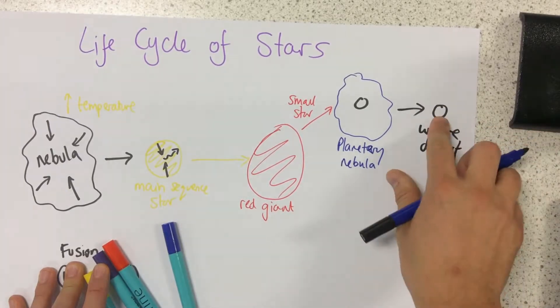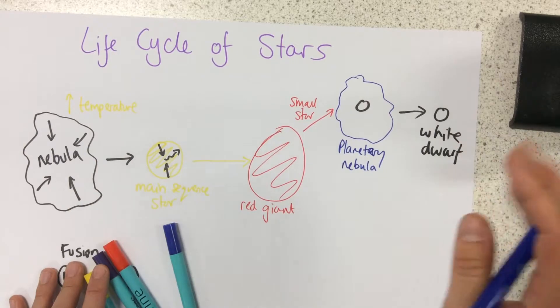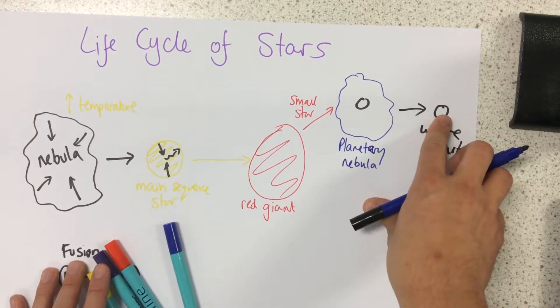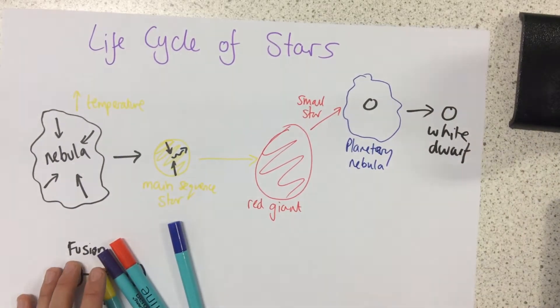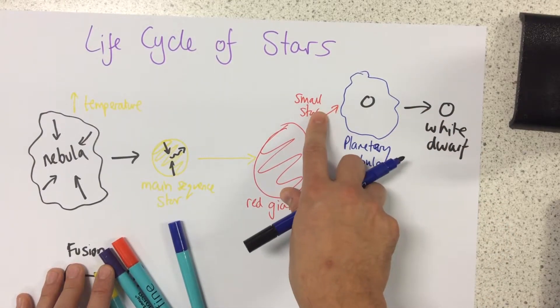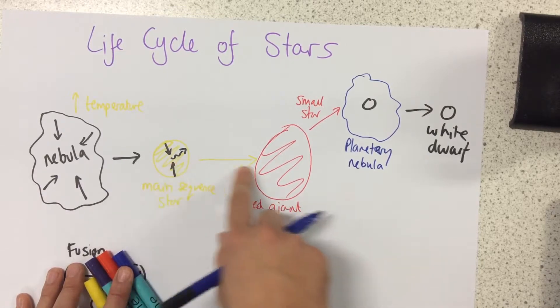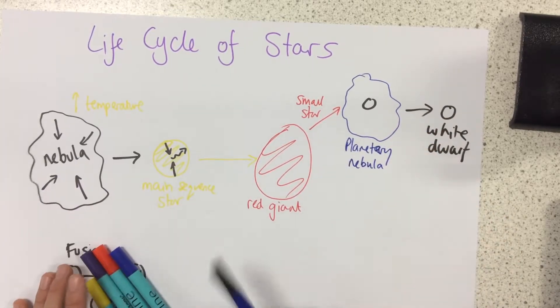This white dwarf just slowly cools over a very long period of time, so it just cools down and eventually disappears altogether. So that's the life of a small star. This is similar to the Sun in our solar system, so this is what will eventually happen to our Sun.